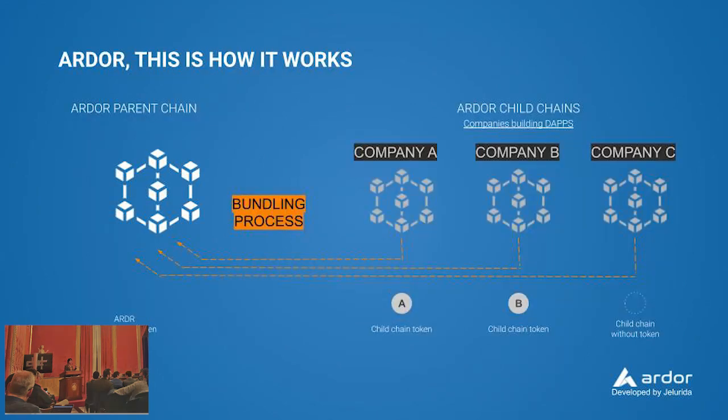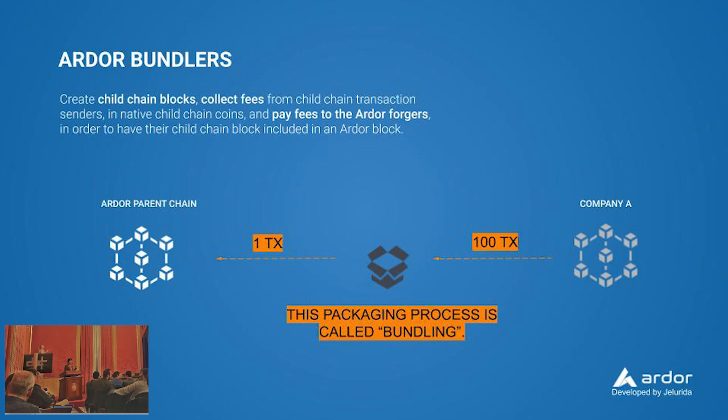On the other side we have child chains. Every child chain is a company and every company can have its own native token. Because they cannot perform the consensus algorithm, they have to rely on the parent chain for security. The way to do that is through what we call the bundling process, which is used to group child chain transactions — up to 100 — into one single transaction on the Ardor parent chain.